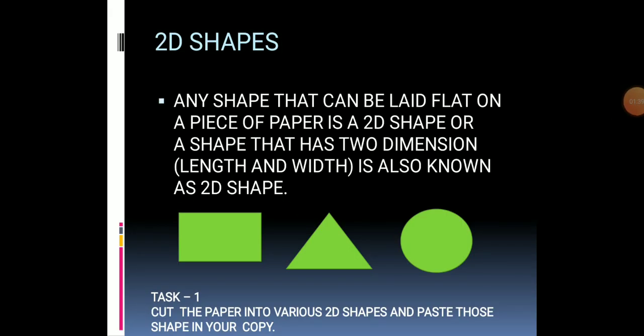Now let's understand 2D shapes. Any shape that can be laid flat on a piece of paper is a 2D shape, or a shape that has two dimensions — length and width. You can also say that any shape we can make by cutting paper is a 2D shape. Your first task is to cut paper into various 2D shapes and paste those shapes in your copy.